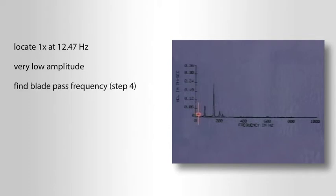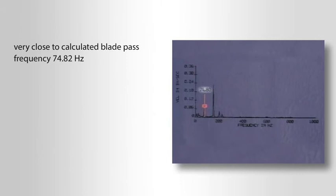We'll find the blade pass frequency in step four by placing the cursor on the first distinct peak to the right of the one-times. We find a frequency of 74.80 hertz, which is very close to our calculated blade pass frequency of 74.82 hertz, and we know we have identified the blade pass.